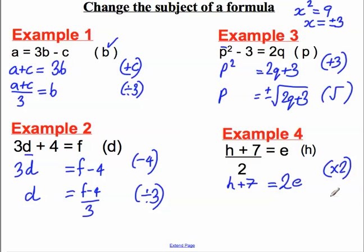To undo the add 7, I could subtract 7 from both sides. And I would get H is equal to 2E subtract 7. And H is the subject of the formula.